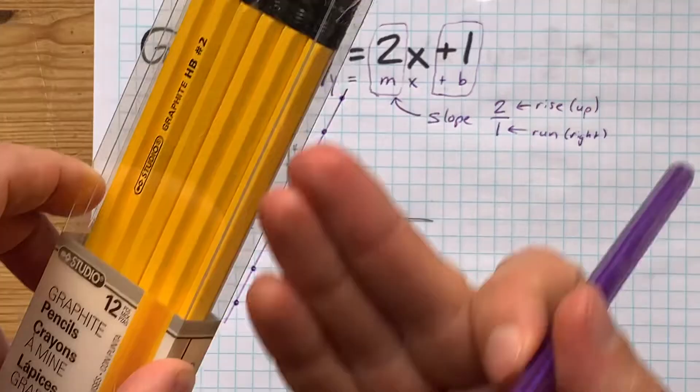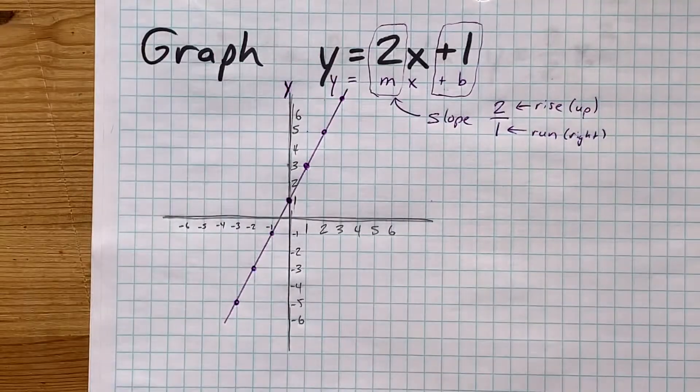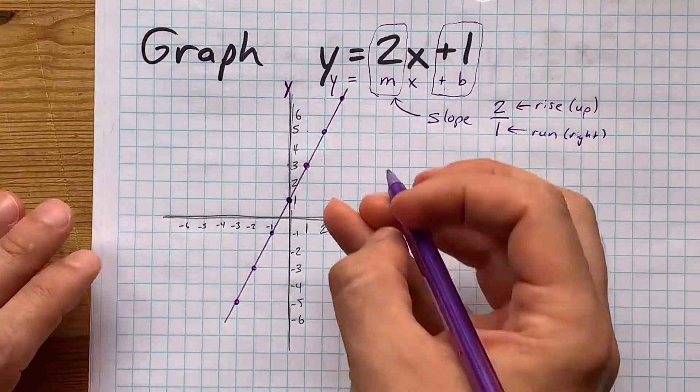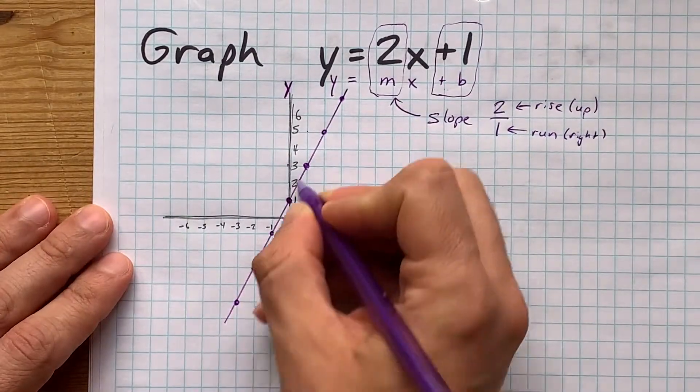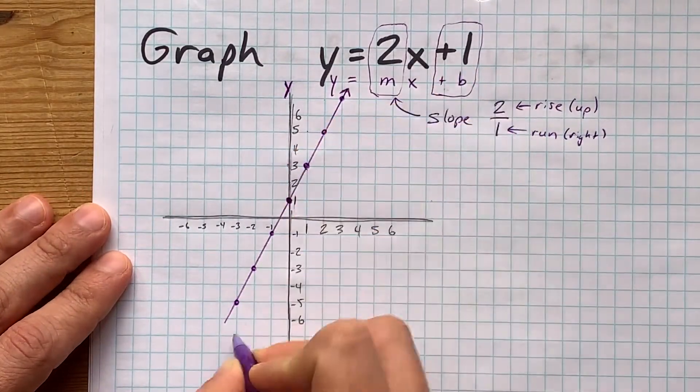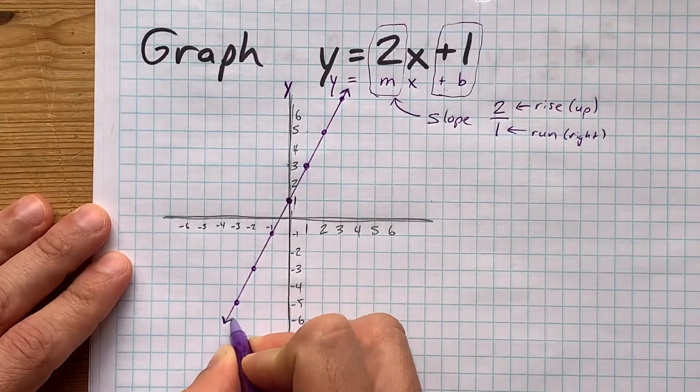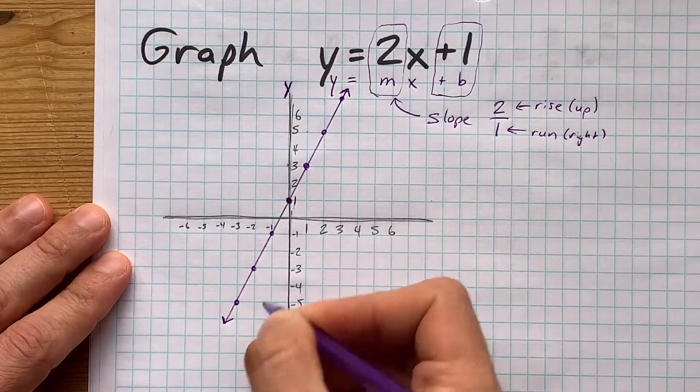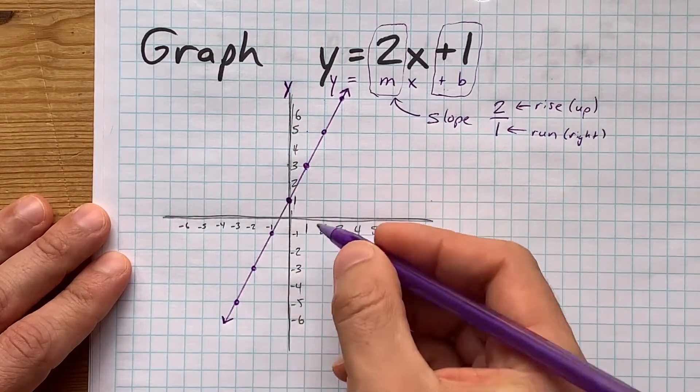If a ruler or straight edge did not go through all of the points you drew, then you may have just counted wrong for one of them. Go back and check.